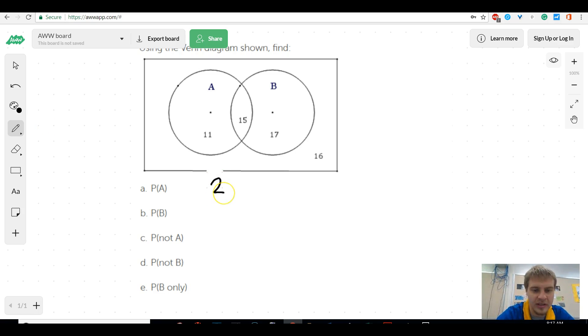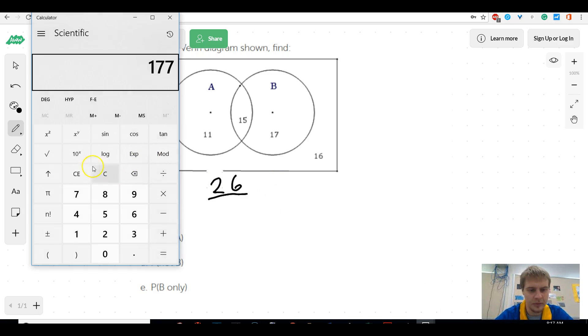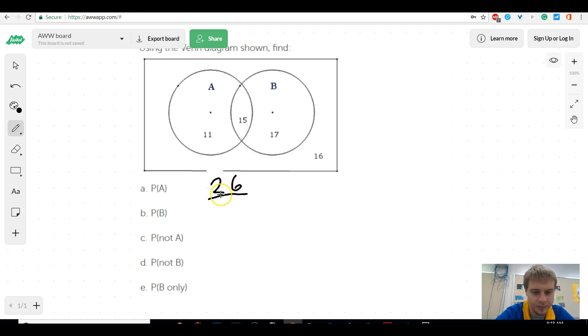Would be 26 over the total number of people. And so we'll have to find the total number of people, which won't be too bad to do: 11 plus 15 plus 17 plus 16, 59. So there's 59 total people. So that would be my probability of A. Again, they're going to want you to reduce it if you can. I do not care. The probability of B would be the same idea, which would be 32 over 59.